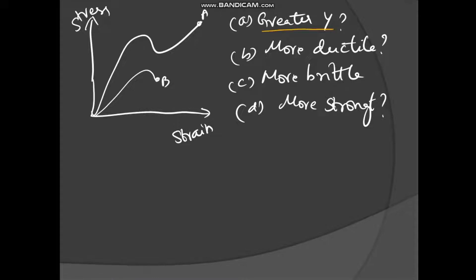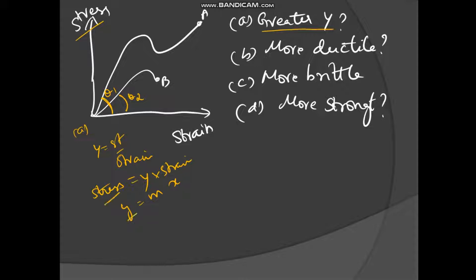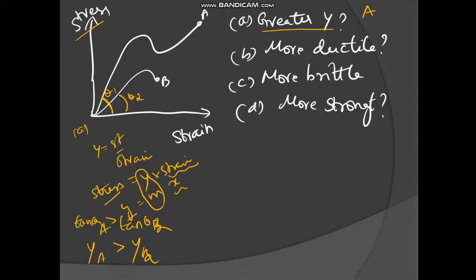Consider the next question: which wire has greater Young's modulus? For wire A the angle is theta-1 and for wire B it is theta-2. Since stress = Y × strain, slope equals Young's modulus. Since tan(theta-1) > tan(theta-2), Young's modulus of A is greater than Young's modulus of B. Also, more ductile means more plastic deformation region — wire A has a larger plastic deformation region, so A is more ductile.